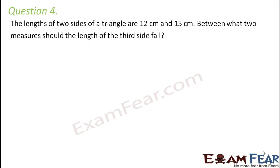Question number 4: The lengths of two sides of a triangle are 12 cm and 15 cm. Between what two measures should the length of the third side fall? In this case, two side lengths are already given. We have to determine the third side length when we know that these three sides are going to form a triangle. We will follow the same logic: sum of two sides must always be greater than the third side.